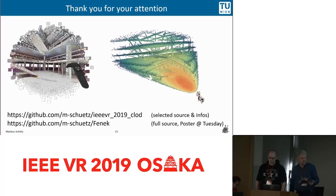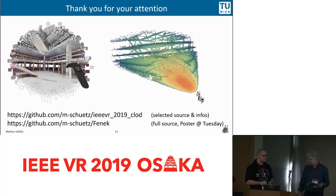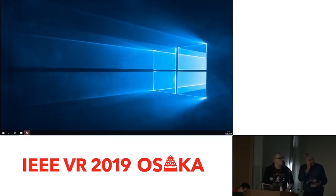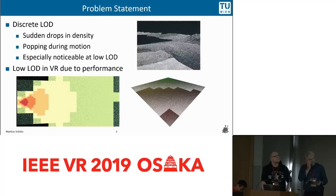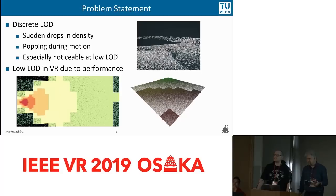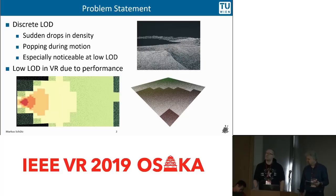Question: Why can't you also fade in and out the LOD tiles in the baseline discrete method? Answer: You can fade it in and out, but you still have these chunks and will notice them — we have another point cloud renderer where someone did that and it's still noticeable. The questioner notes that the coloring in the comparison video may be exaggerating the effect and suggests it would be useful as future work to compare against a faded version of the discrete baseline.